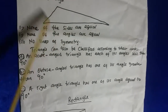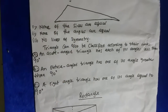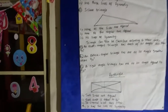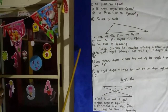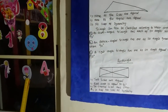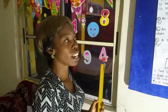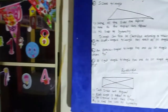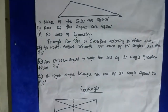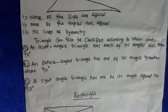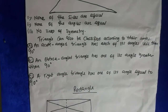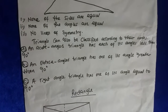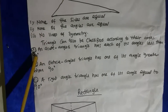There's no line of symmetry. Now, I just want you to note: triangles can also be classified according to their angles. An acute angle triangle has each of its angles less than 90 degrees.